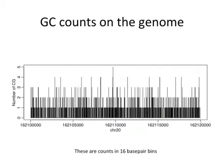Methylation happens at C followed by G from 5' to 3' — that's where methylation occurs, a dinucleotide called CpG. This figure shows counts for different dinucleotides in bins of 16 base pairs. If you take bins of 16 bases and count CGs, how many would you expect on average if it's just random? Since Gs and Cs are less common than A and Ts, it's about 1 in 20 — a Poisson count, which is exactly what this data shows.